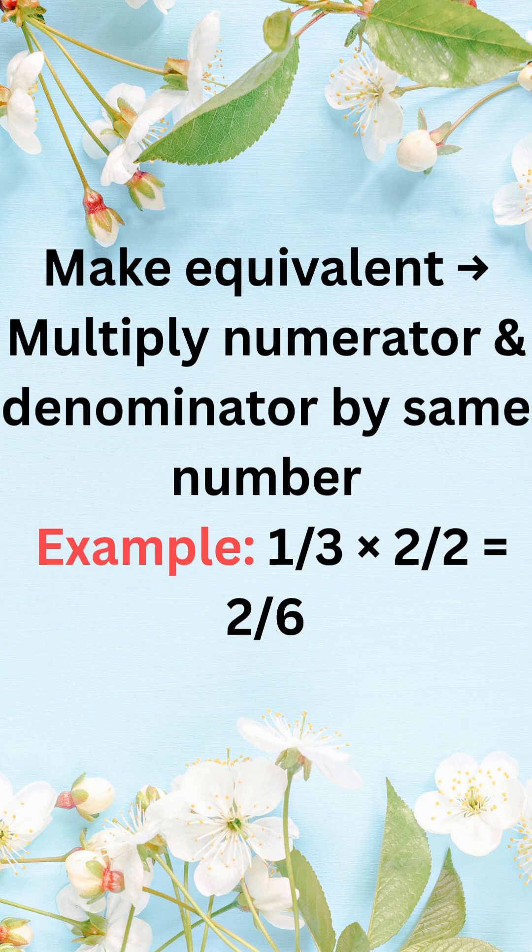Easy to create equivalent fractions, multiply numerator and denominator by the same non-zero number. For example, multiply one third by two over two, two sixths.